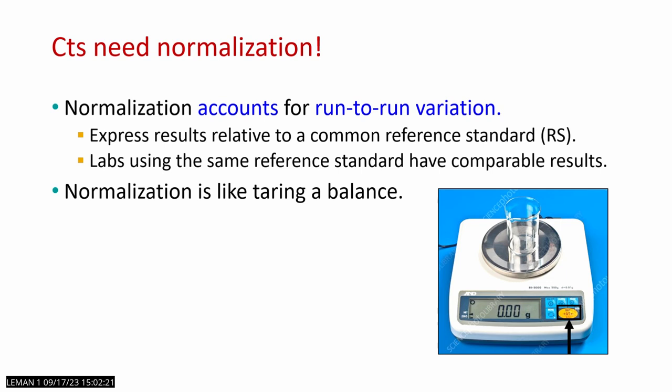Normalization is accounting for run-to-run variation. Coming back to that first slide, the area of opportunity is that CTs or CQs are not normalized. When we normalize, we express results relative to a reference standard. If all labs use the same reference standard, then we have comparable results. Normalization is kind of like pressing the tare button on a scale — you want to get rid of the added weight from the container and only focus on the net weight of whatever you're analyzing.